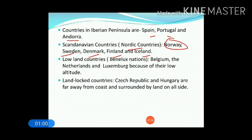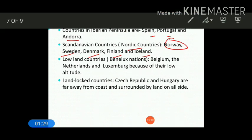Lowland countries are also known as Benelux countries. They are Belgium, the Netherlands, and Luxembourg. These are called lowland countries because their altitude is very low — almost near sea level. This is why these countries are known as Benelux or lowland countries. The landlocked countries of Europe are the Czech Republic and Hungary, because they are far away from the coast and surrounded by land on all sides.